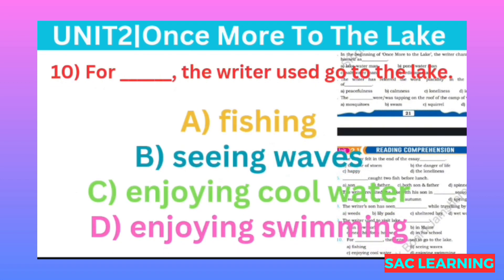MCQ number 10, the last MCQ of unit number two 'Once More to the Lake' for class first year: For what purpose did the writer used to go to the lake? (Musnif jheel par kya karne jaate the?) Option A: fishing, B: seeing waves, C: enjoying cool water, D: enjoying swimming. Correct option is A, fishing. Thanks for watching.